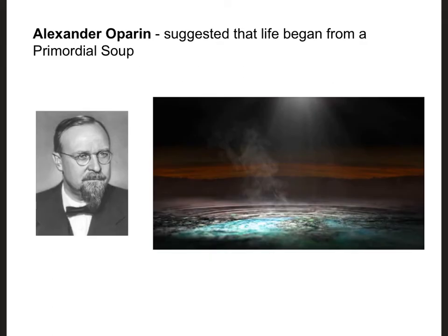Before we could actually have life evolve, we had to have what we refer to as chemical evolution — the evolution of things like DNA and amino acids. It was in the early 20th century that a scientist named Alexander Oparin, a Russian scientist, suggested that life sort of bubbled up from what he called a primordial soup. He didn't actually put any experiments to the test, but he suggested that life began from what he called primordial soup.